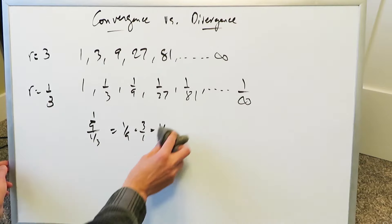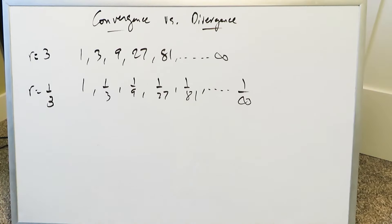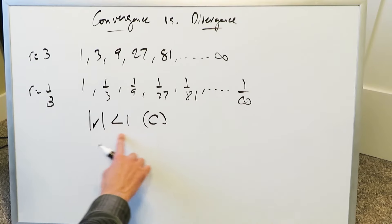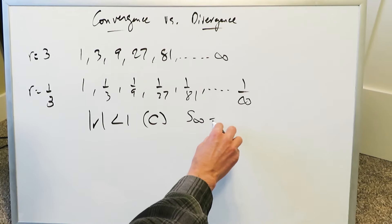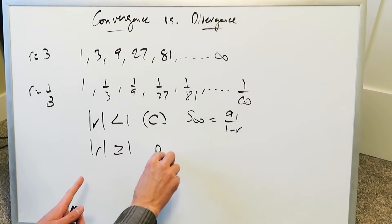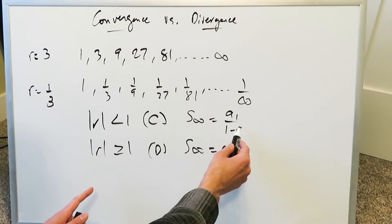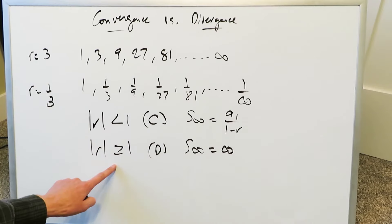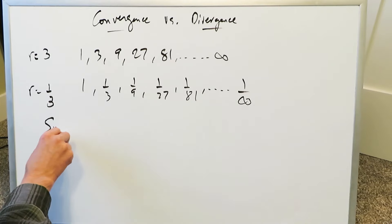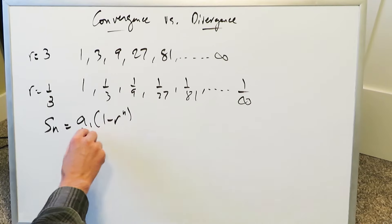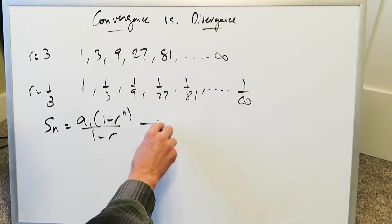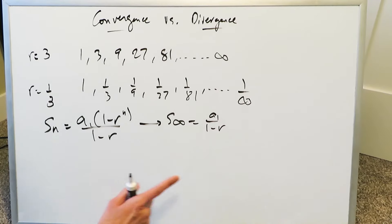Think back to what I mentioned previously: when the common ratio in absolute value is less than 1, you'll have convergence, and you can use the formula — the sum equals a₁ over (1 minus r). In the instance where the ratio is greater than or equal to 1, you'll see divergence. The formula Sₙ = a₁ times (1 minus rⁿ) over (1 minus r), when taken to the limit as n approaches infinity, gives you a₁ over (1 minus r) for convergent cases.